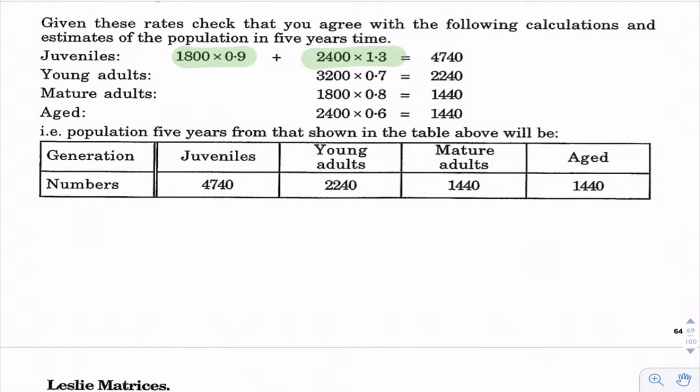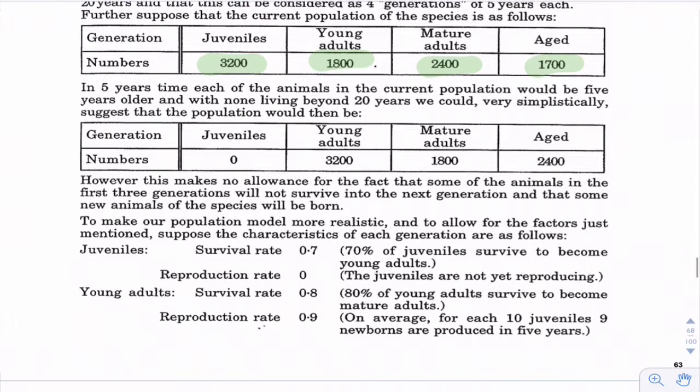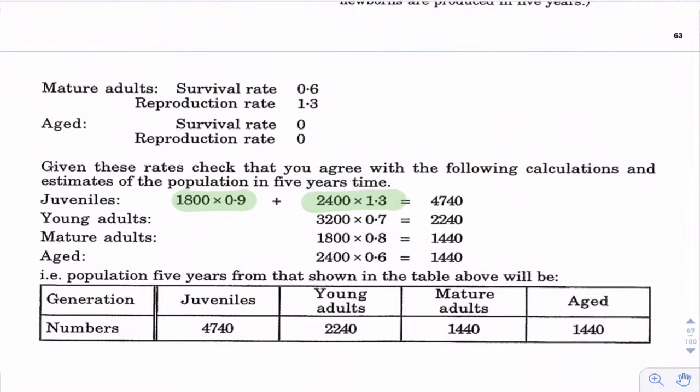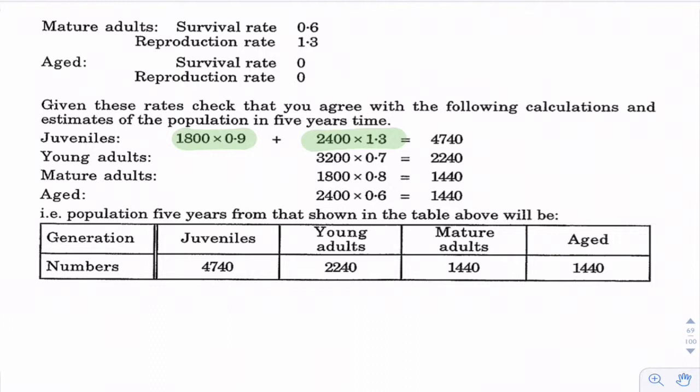Let's look at the calculations for how many will be in each group in five years time. For the juveniles, we have the young adults reproducing at a rate of 0.9 and all 2,400 mature adults reproducing at a rate of 1.3, leaving us with 4,740 juveniles or babies.